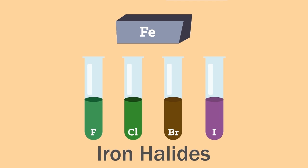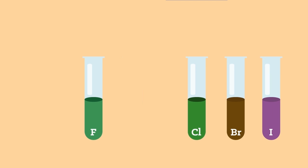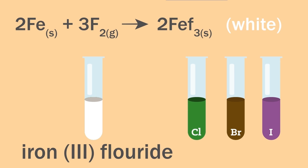Iron when reacted with an excess of a halogen that's fluorine, chlorine, bromine and iodine produces iron halides. These have different colors as shown by the equations on the screen.